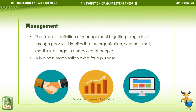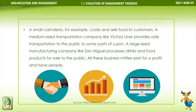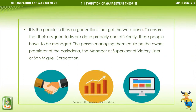The simplest definition of management is getting things done through people. It implies that an organization, whether small, medium, or large, is composed of people. A business organization exists for a purpose — a small carinderia, for example, cooks and sells food to customers; a medium-sized transportation company like Victory Liner provides safe transportation to the public; a large-sized manufacturing company like San Miguel processes drinks and food products for sale. All these business entities exist for a profit and have people, and it is the people in these organizations that get the work done.